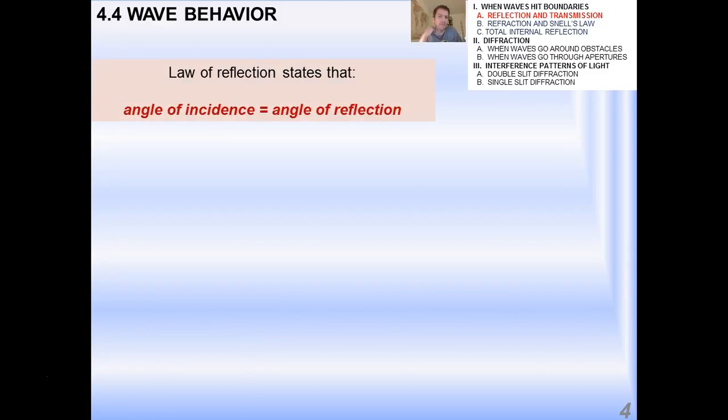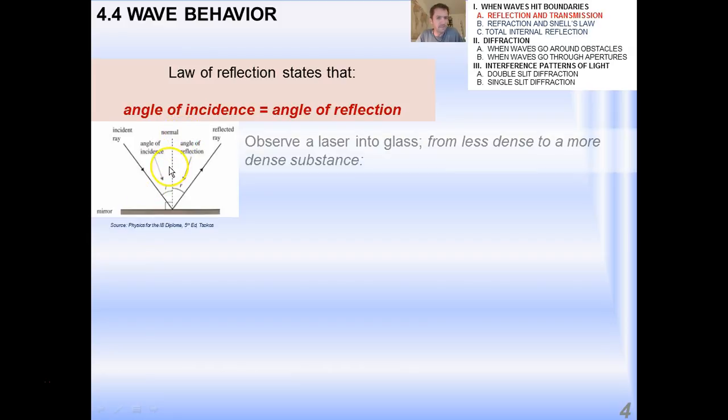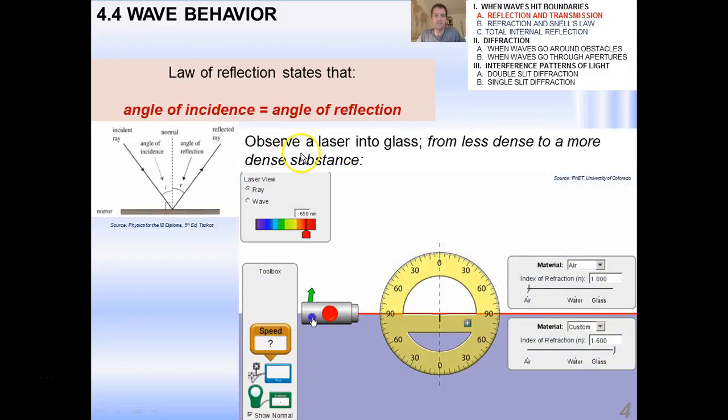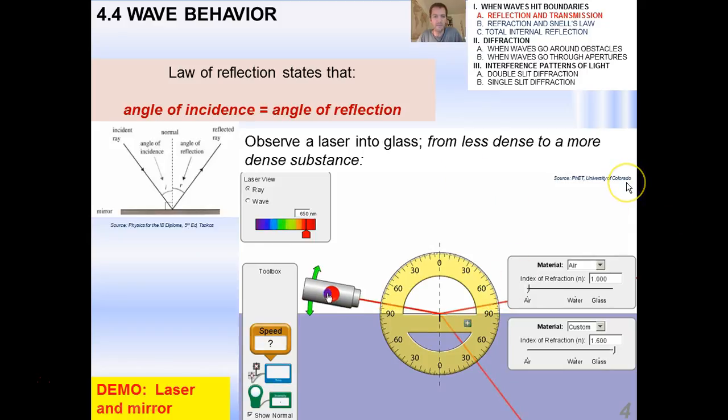Okay, now, the law of reflection is very easy, and it just states that the angle of incidence is equal to the angle of reflection. And remember, when we're talking about waves bouncing off of a surface or hitting a surface, the angle in question is always the angle relative to the normal. So if you observe, for example, a laser into glass from a less dense to a more dense substance, you'll see how the reflected angle, this angle here and this angle over here are both the same. You also see in this particular demo the transmitted beam going through, and you're seeing properly that that transmitted or refracted beam is bent towards the normal because it's going from a less optically dense to a more optically dense substance.